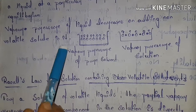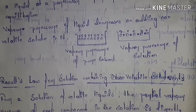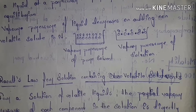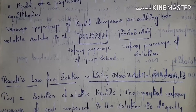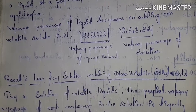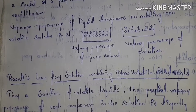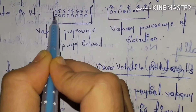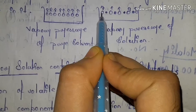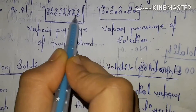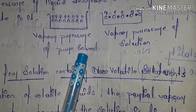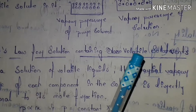Vapor pressure of a liquid decreases on adding a non-volatile solute to it. For example, when making Maggi — when we add Maggi to water, it takes longer to boil because adding solute decreases the vapor pressure of the solvent. As seen in the diagram: when pure solvent is there, vapor pressure acts over the full surface; but when solute is added, vapor pressure is created from fewer sites. Remember: vapor pressure of pure solvent is greater than vapor pressure of the solution — and many laws are based on this.